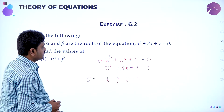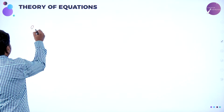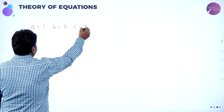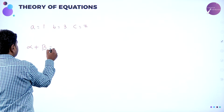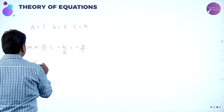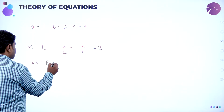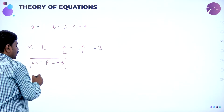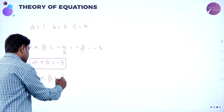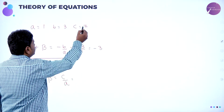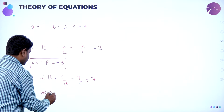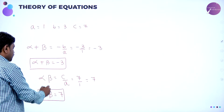So A is 1, B is 3, C is 7. Now find sum of the roots: alpha plus beta equals minus B by A, that is minus 3 divided by 1, which gives alpha plus beta equals minus 3. Now go to the product of roots: alpha into beta equals C by A, which is 7 divided by 1, so alpha into beta equals 7. We now have sum of roots minus 3 and product of roots 7.